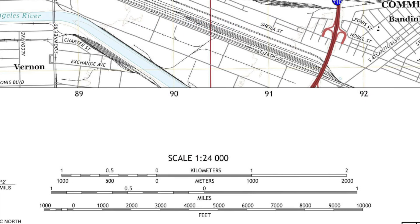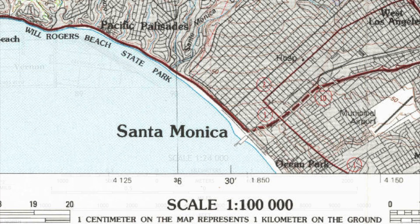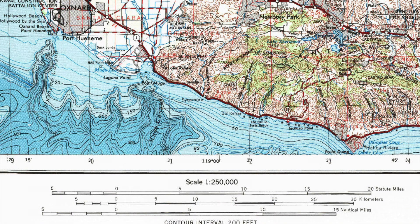The larger the number that the map distance represents on the scale indicator, the smaller the scale of the map. This can be confusing to many, but think of it this way: the 'small' in small scale refers to the small amount of detail represented on the map.